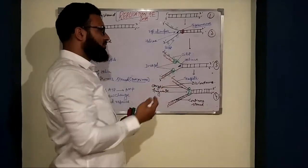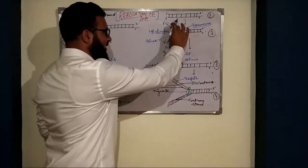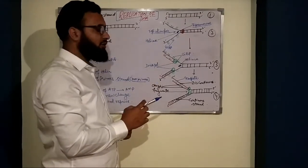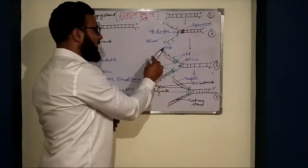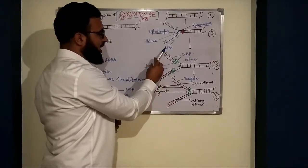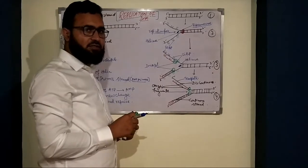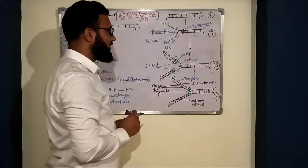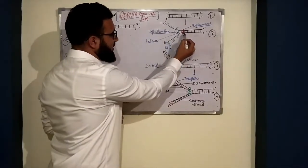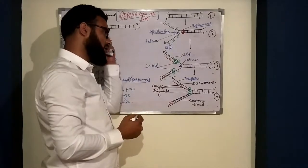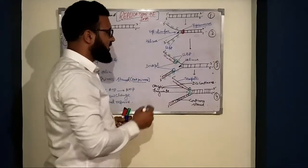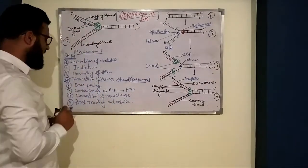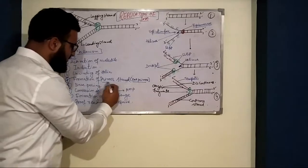When the two strands open, there is a chance that they will re-anneal and not stay separated. To prevent this, another enzyme called SSBP — single strand binding protein — binds to the two open strands so they stay separated. This forms a Y-shape structure, which is also called the replication fork. The next point is the formation of the primer strand.